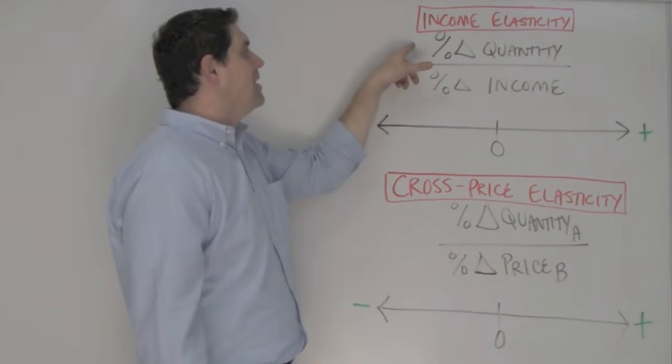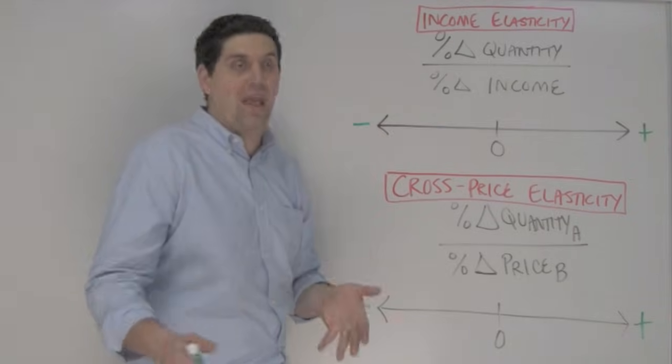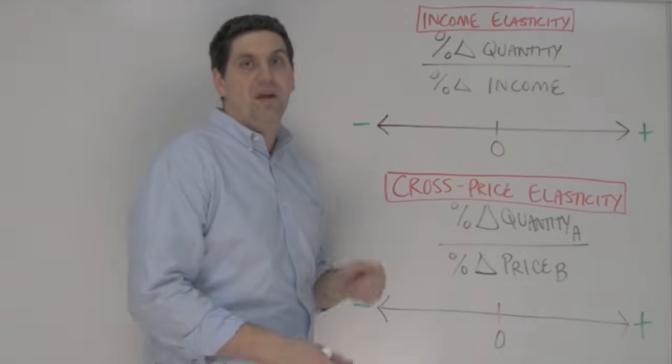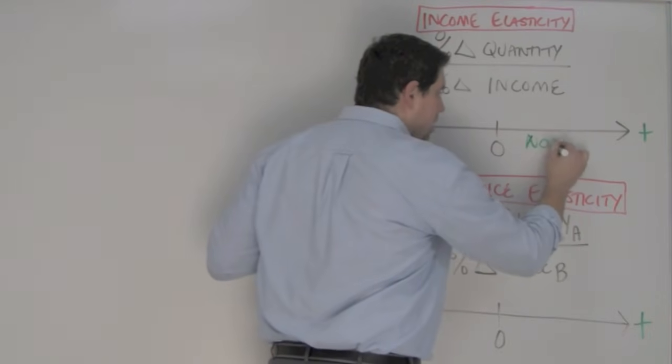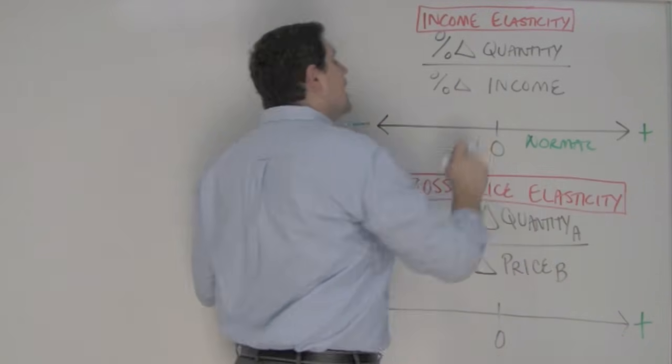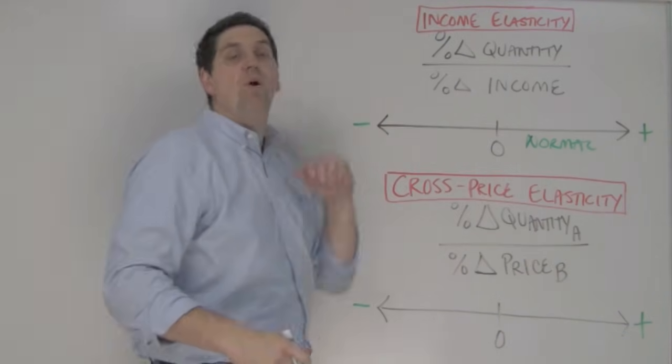Now, if the income goes down and people buy less of it, that would be a positive number again, right? Down and down means it would be positive. That means that this is a normal good. A normal good is when your income goes up for something and people buy more of it.